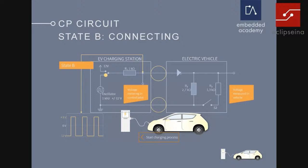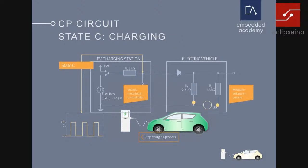On the minus side it's still 12 volts from the oscillator signal. Then going to the next stage happens automatically — the car connects the S2 switch, a second resistor is added in parallel, the voltage drop is even higher, and you only have 6 volts. This voltage level clearly indicates that charging is starting. If you have only low-level communication, AC charging begins at this point. For DC charging, several additional data exchange and protocols are necessary.